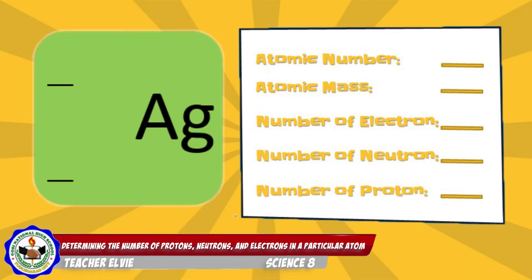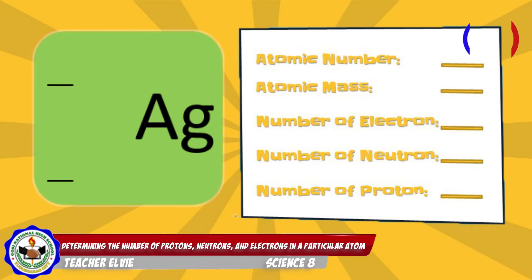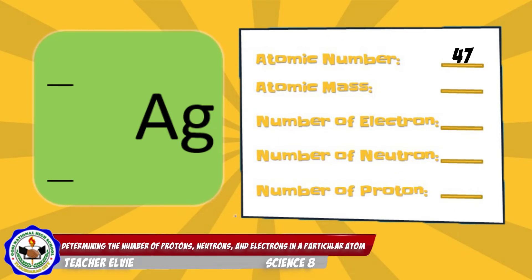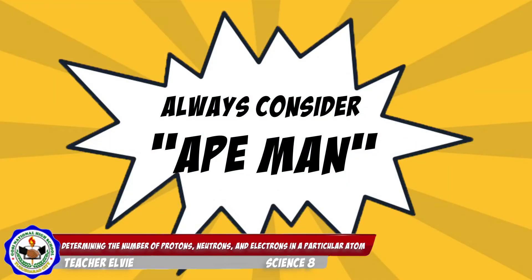And number 3: Silver. The atomic number is 47, atomic mass is 108, number of electrons is 47, number of neutrons is 61, and number of protons is 47. So always consider the Ape-Man mnemonic in determining the number of protons, electrons, and neutrons.